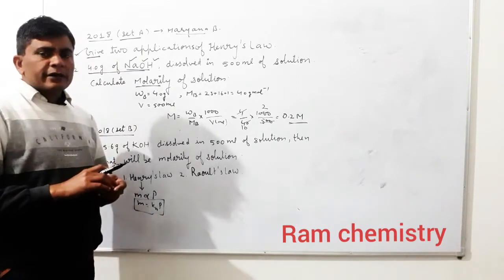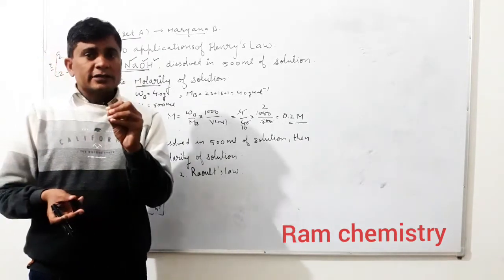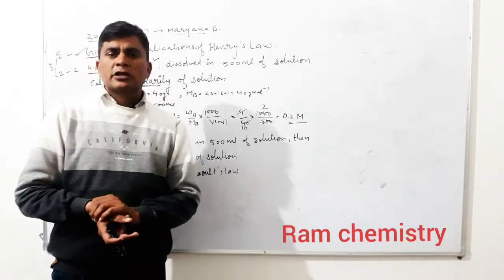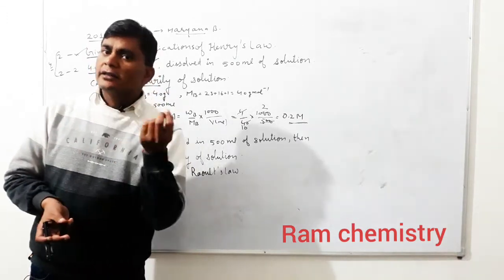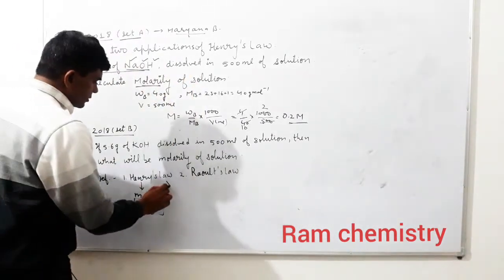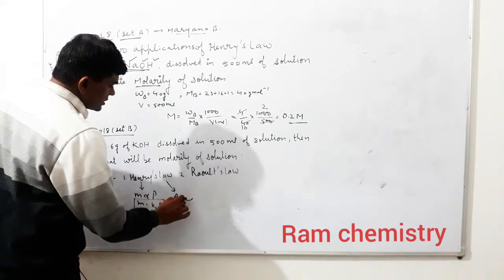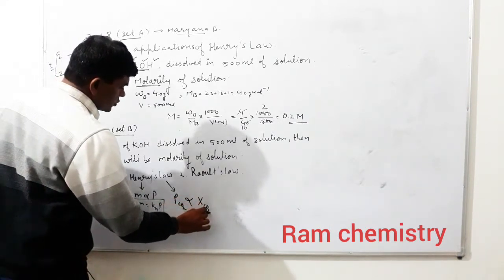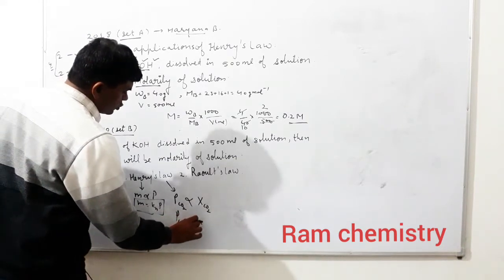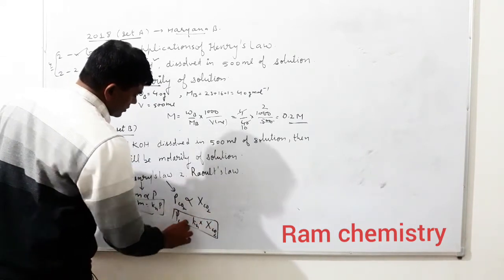Second definition: maal lijiye ek cold drink ki bottle hai aur uske andar carbon dioxide gas dissolved hai. Us carbon dioxide gas ka partial pressure kitna hai? That partial pressure is directly proportional to the mole fraction of the gas. So the second statement: the partial pressure of CO2 is directly proportional to mole fraction of CO2, i.e., partial pressure of CO2 = KH × mole fraction of CO2.